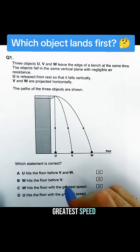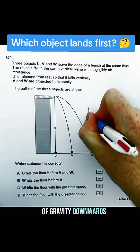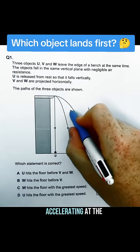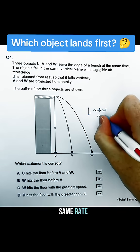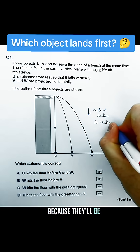Now we should know that because they're all under the influence of gravity downwards, their vertical motion will be identical. They'll all be accelerating at the same rate. So that means if vertical motion is identical because they're all acted on by gravity,